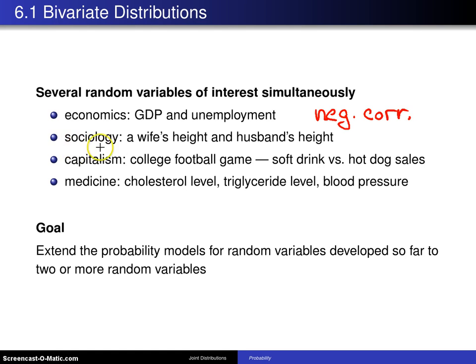Here's another example from sociology: a wife's height and a husband's height. This is easy to gather data on. What they have found is there is a slight positive correlation between those two random variables — taller men will tend to marry taller women on average.